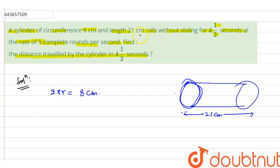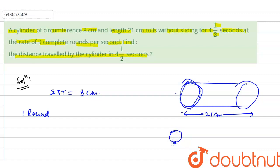Now, it is given that the cylinder rolls without sliding for four and half seconds at the rate of nine complete rounds per second. When the cylinder makes one round, try to understand this — just suppose this is a circle. If the circle starts to move and completes one round, when it comes back to the same point, it will complete one circumference.